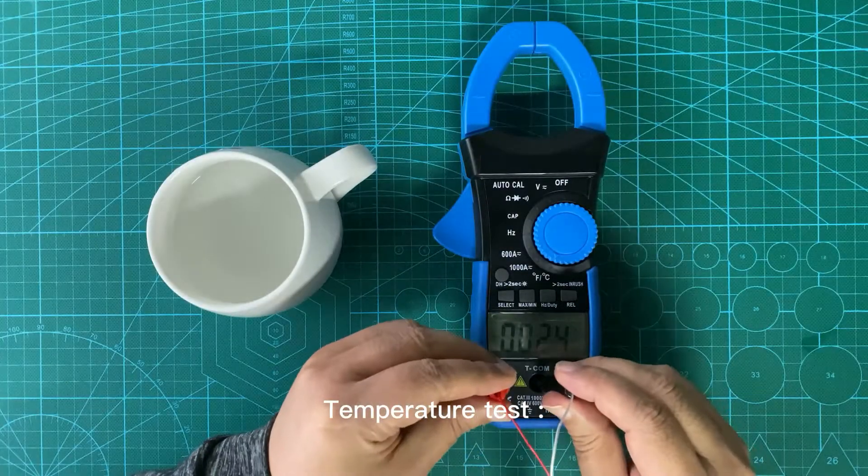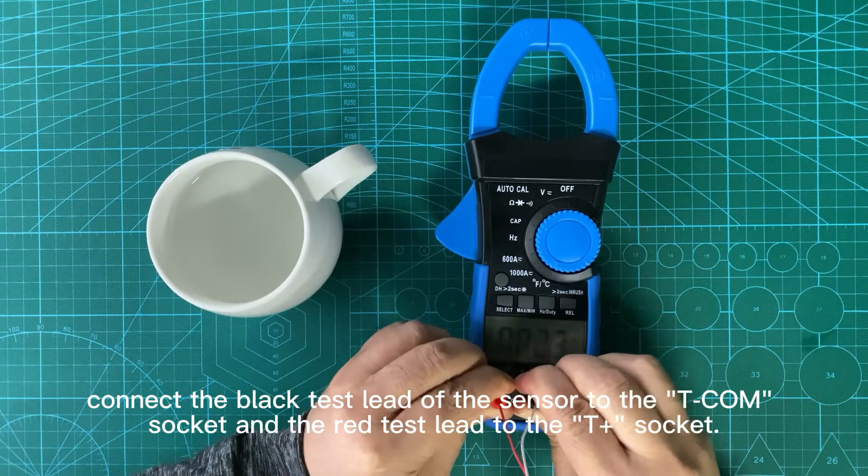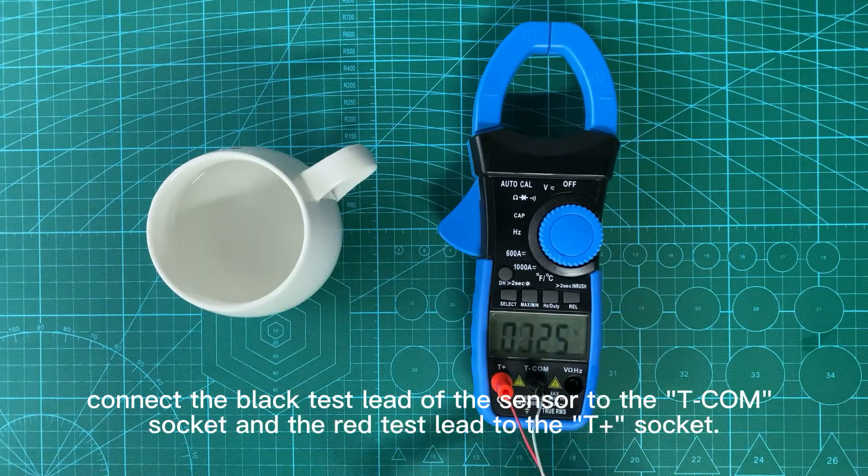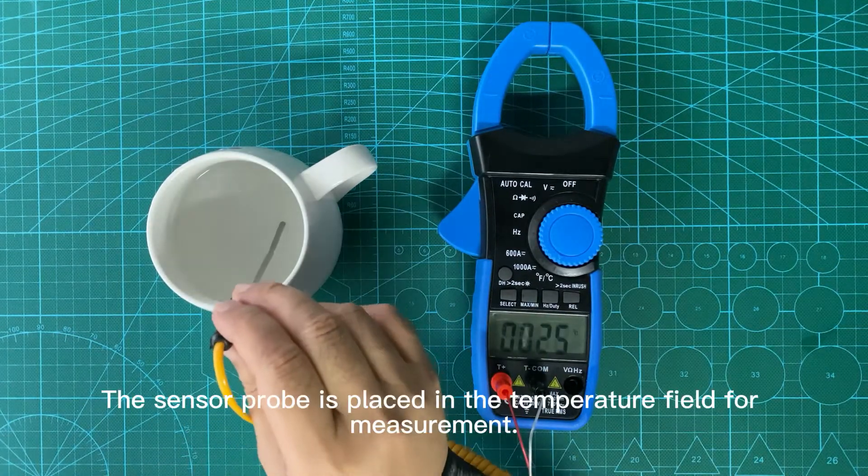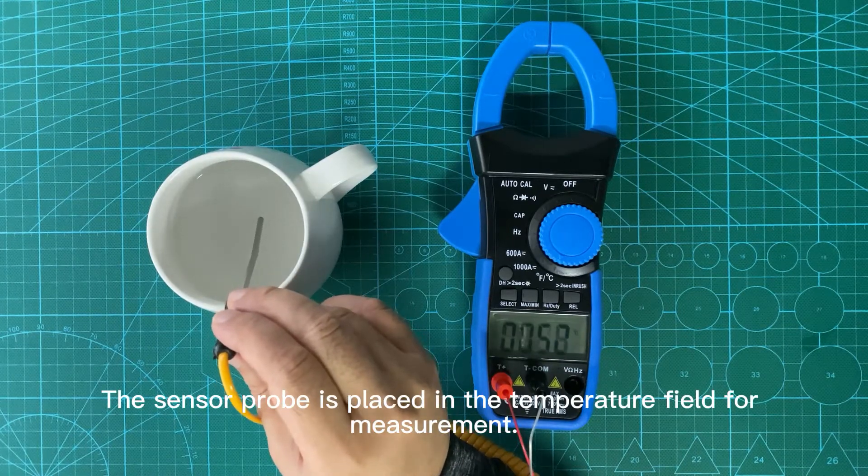Temperature test: Connect the black test lead of the sensor to the T-COM socket and the red test lead to the T-Plus socket. Place the sensor probe in the temperature field for measurement.